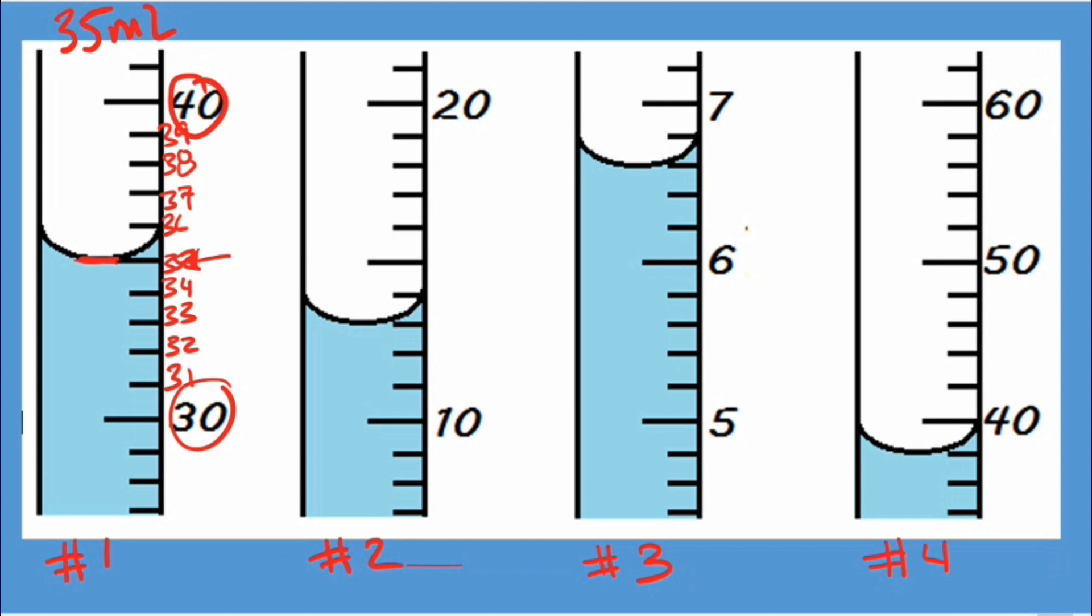How about the second one? What did you get? I'm hoping you got 13 milliliters. Same thing—we went up by ones. There's that bottom of the meniscus. I'm just going to fill this in so we can see that it continues by whole numbers. Our number is 13 milliliters.